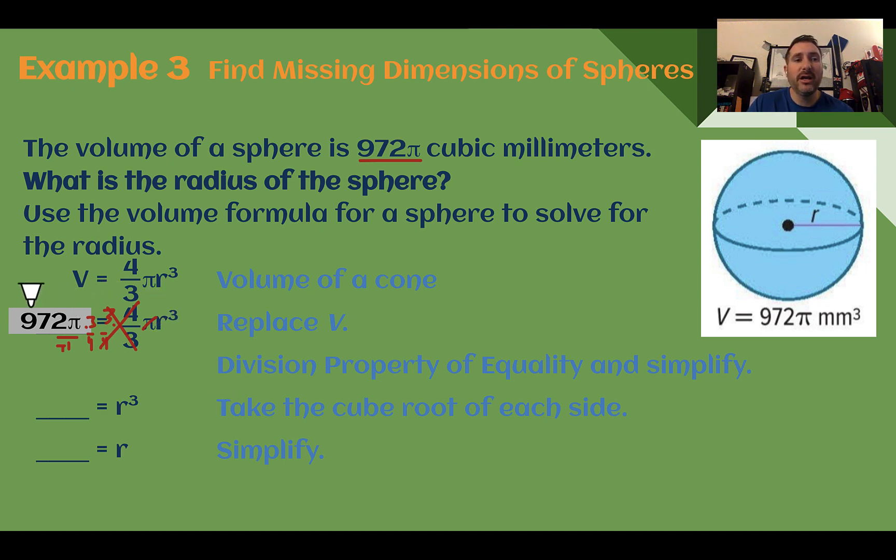I'm going to use a calculator here. 972 times 3 fourths. The pi canceled out. So 972 times 3 fourths is 729.